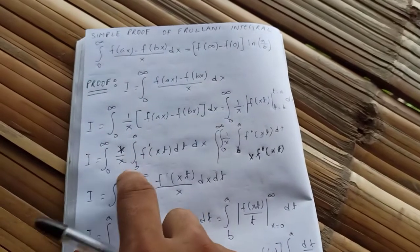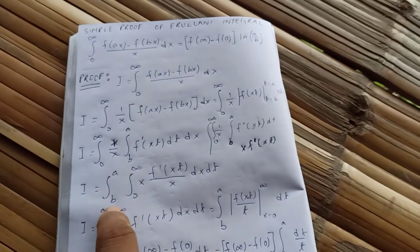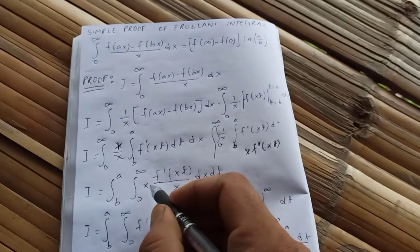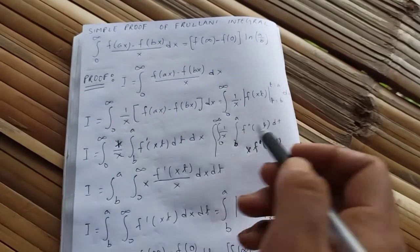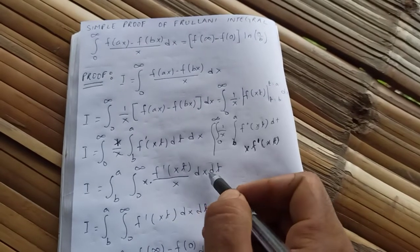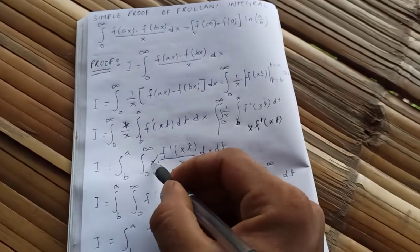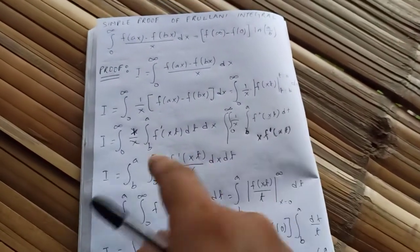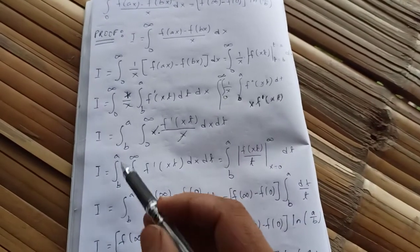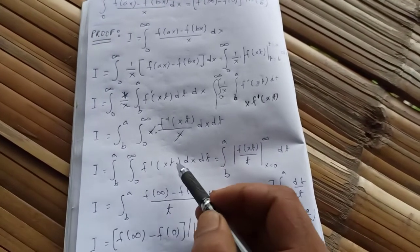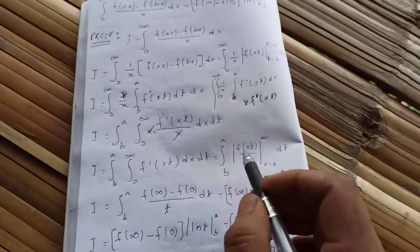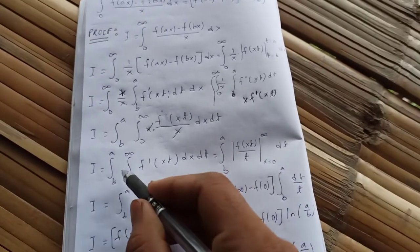Now we interchange the two integrals. I equals the integral from b to a, integral from 0 to infinity of x·f'(xt)/x dx dt. The x's cancel, leaving the integral from b to a of the integral from 0 to infinity of f'(xt) dx dt.